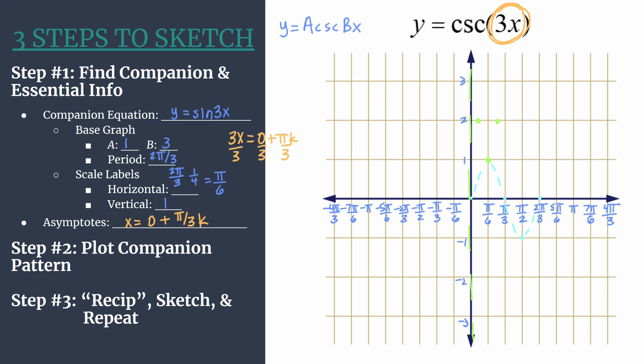Then we get 2 pi over 3, another zero or x-intercept. When you try to take the reciprocal of that you end up with undefined and another asymptote. This is the one when k is one for our asymptotes equation.